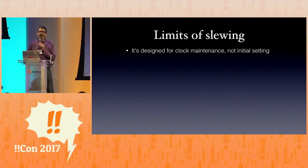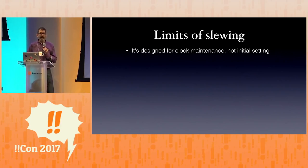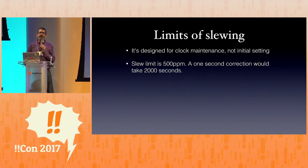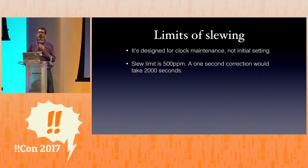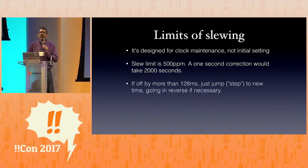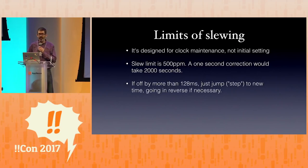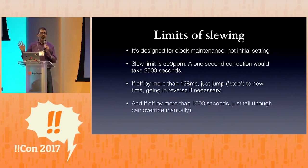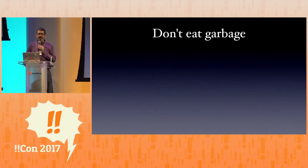But there are limits to slewing. NTP is really designed for clock maintenance, not initial setting. If I buy a brand new computer and plug it in, it has no idea what time it is. If it was off by a lot, it would take decades to catch up because the limit of slewing is 500 parts per million. The design is to have really small changes from reality. So if it's off by more than 128 milliseconds, it just jumps to the correct time — even if it has to go in reverse — because it's better to do that than have your clock be off for 40 minutes or three years. And if you're off by more than 1,000 seconds, NTP just says no — though you can override that manually for that initial moment when you first plug in your computer.